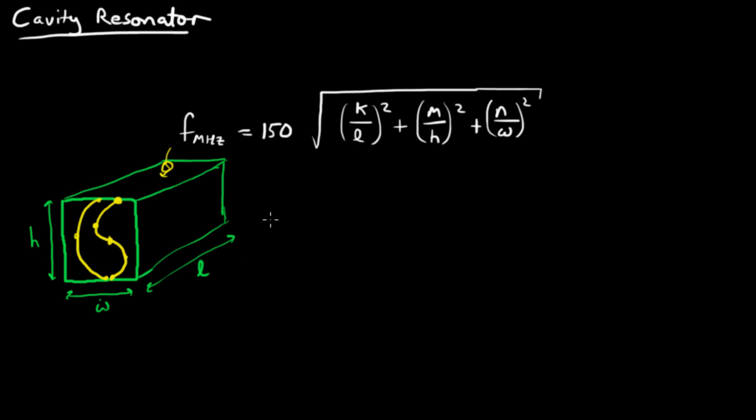Well, how can we describe this situation? Here's an expression through which you can do it. Let me state it and then walk through it. The frequency in megahertz of a resonant frequency equals 150 times the square root of (k/l)² plus (m/h)² plus (n/w)². Here l, h, and w are the length, height, and width in meters.